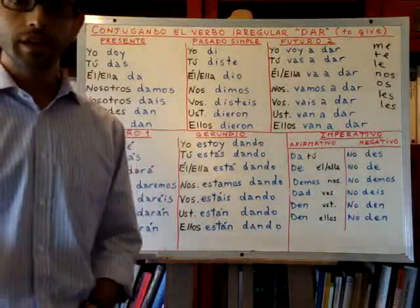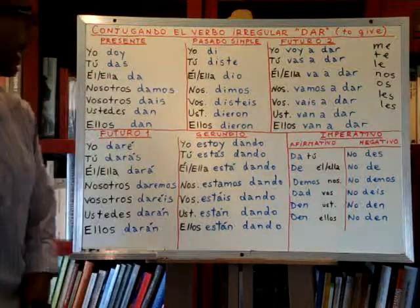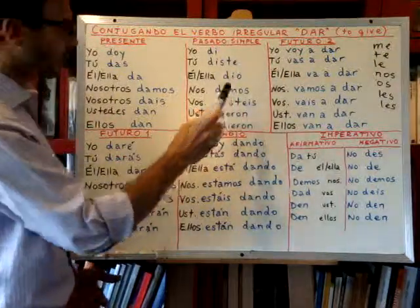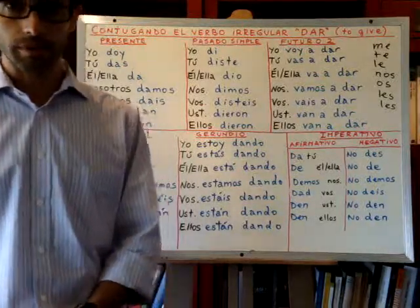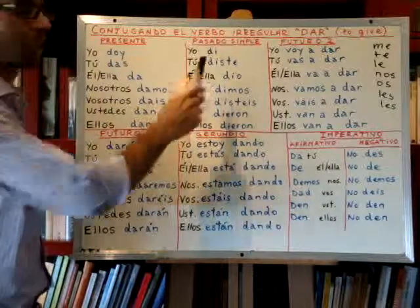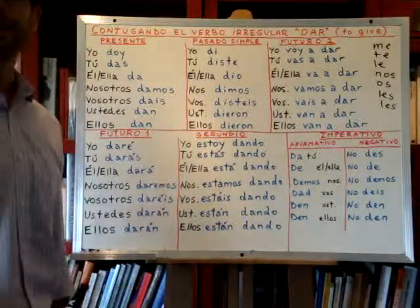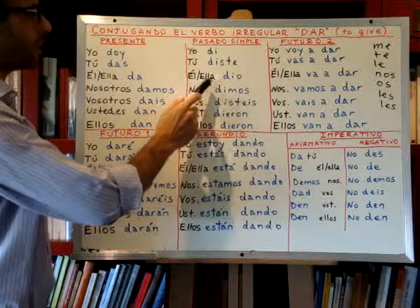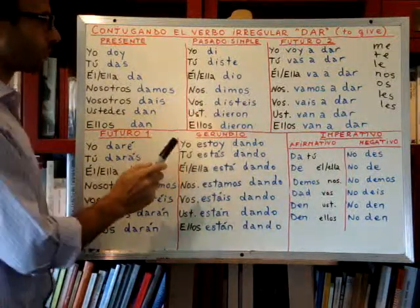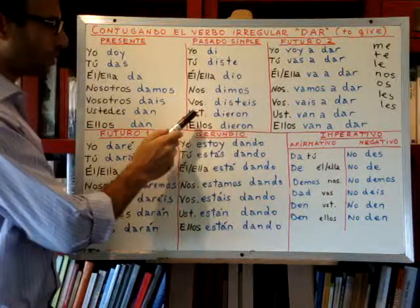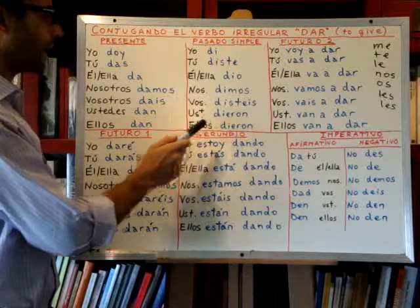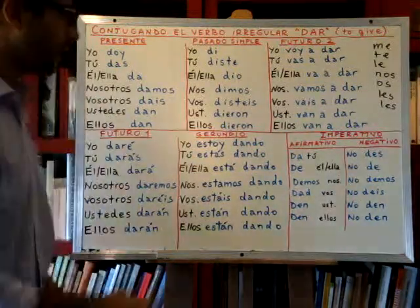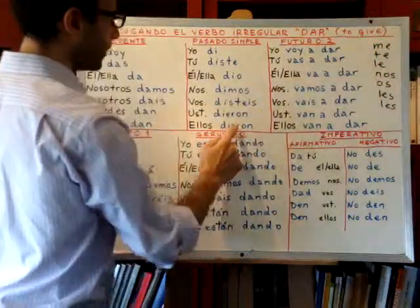For example, 'he gave me this book' — él me dio este libro. Now let's conjugate in the simple past: yo di — I gave. Tú diste — you gave. Él dio, ella dio — he or she gave. Nosotros dimos. Vosotros disteis. Ustedes dieron. And ellos dieron. For example, 'they gave me this' — ellos me dieron esto.